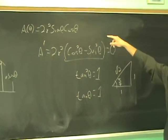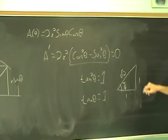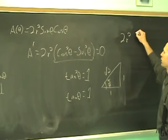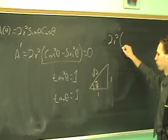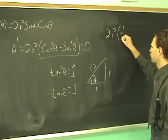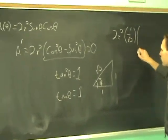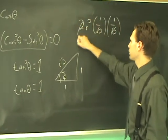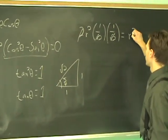And you can plug that back into the original and see if it's going to work. 2R squared, times the sine of pi over 4, which is 1 over radical 2, times the cosine of pi over 4, which is, again, 1 over radical 2. These cancel out. And, again, you're left with R squared.